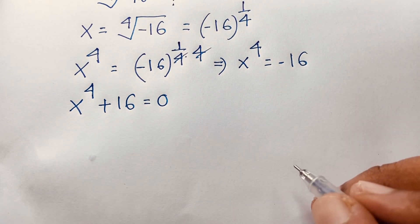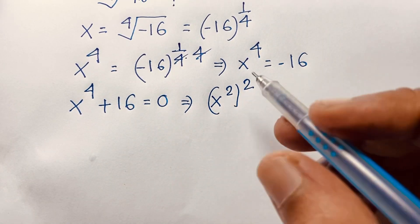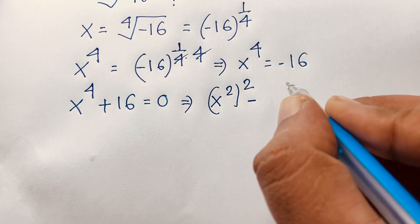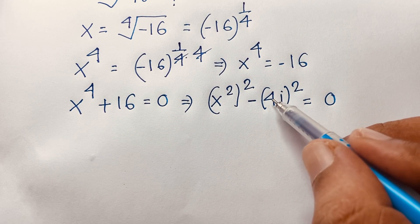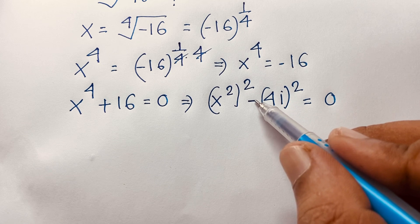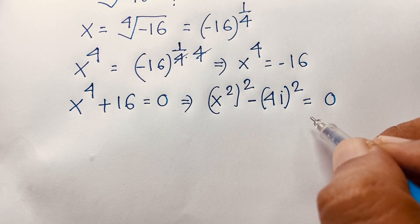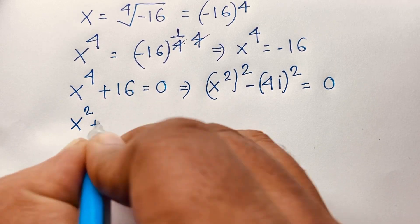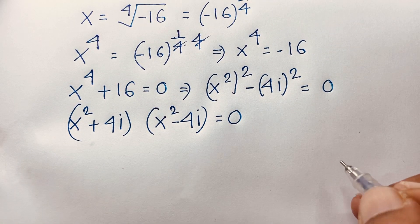We rewrite x⁴ as (x²)². Now I add and subtract (4i)², since (4i)² = 16·i² = -16, so -(4i)² = +16. This gives (x²)² - (4i)² = 0. Using the difference of squares identity a² - b² = (a+b)(a-b), this factors as (x² + 4i)(x² - 4i) = 0.